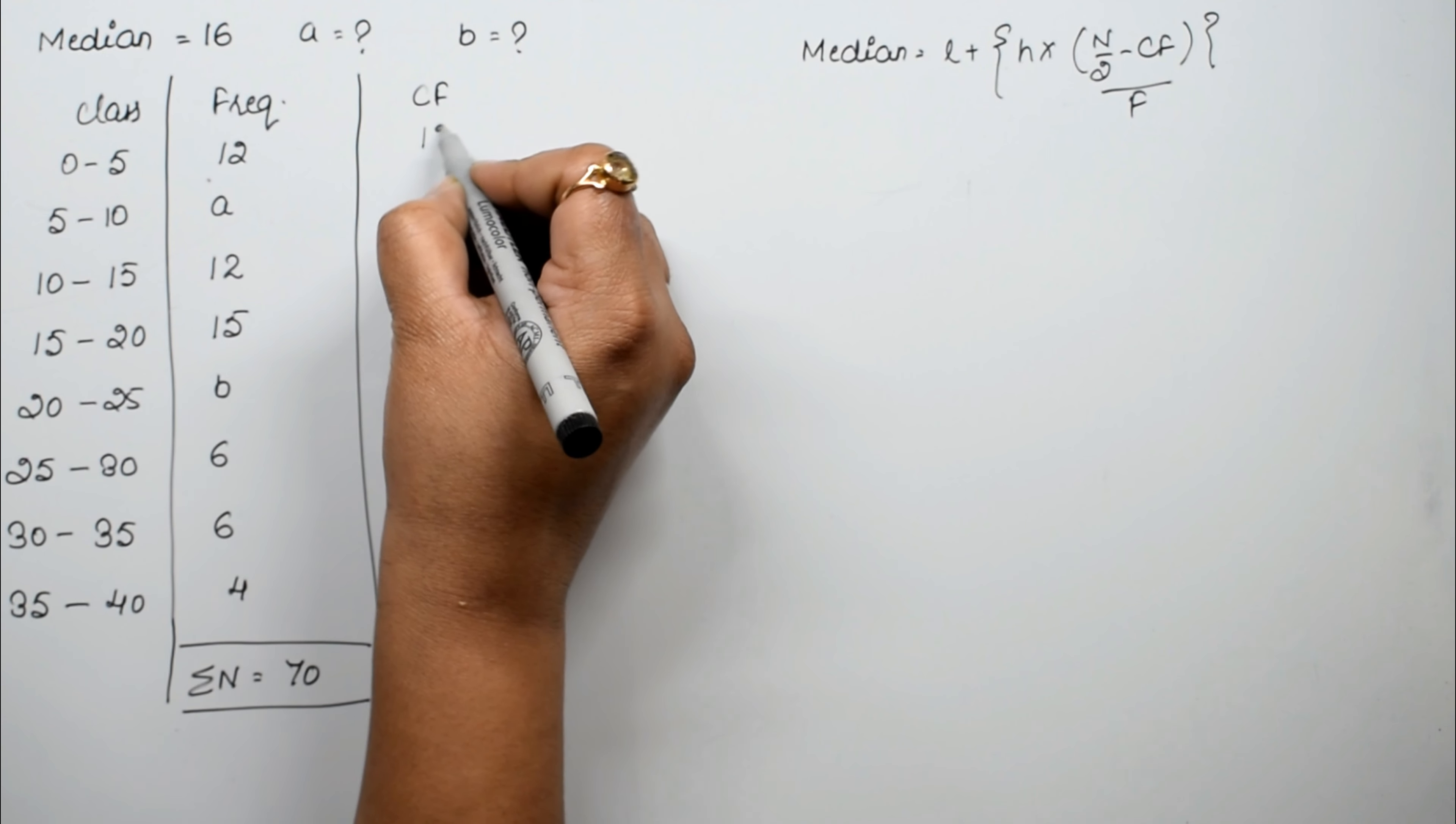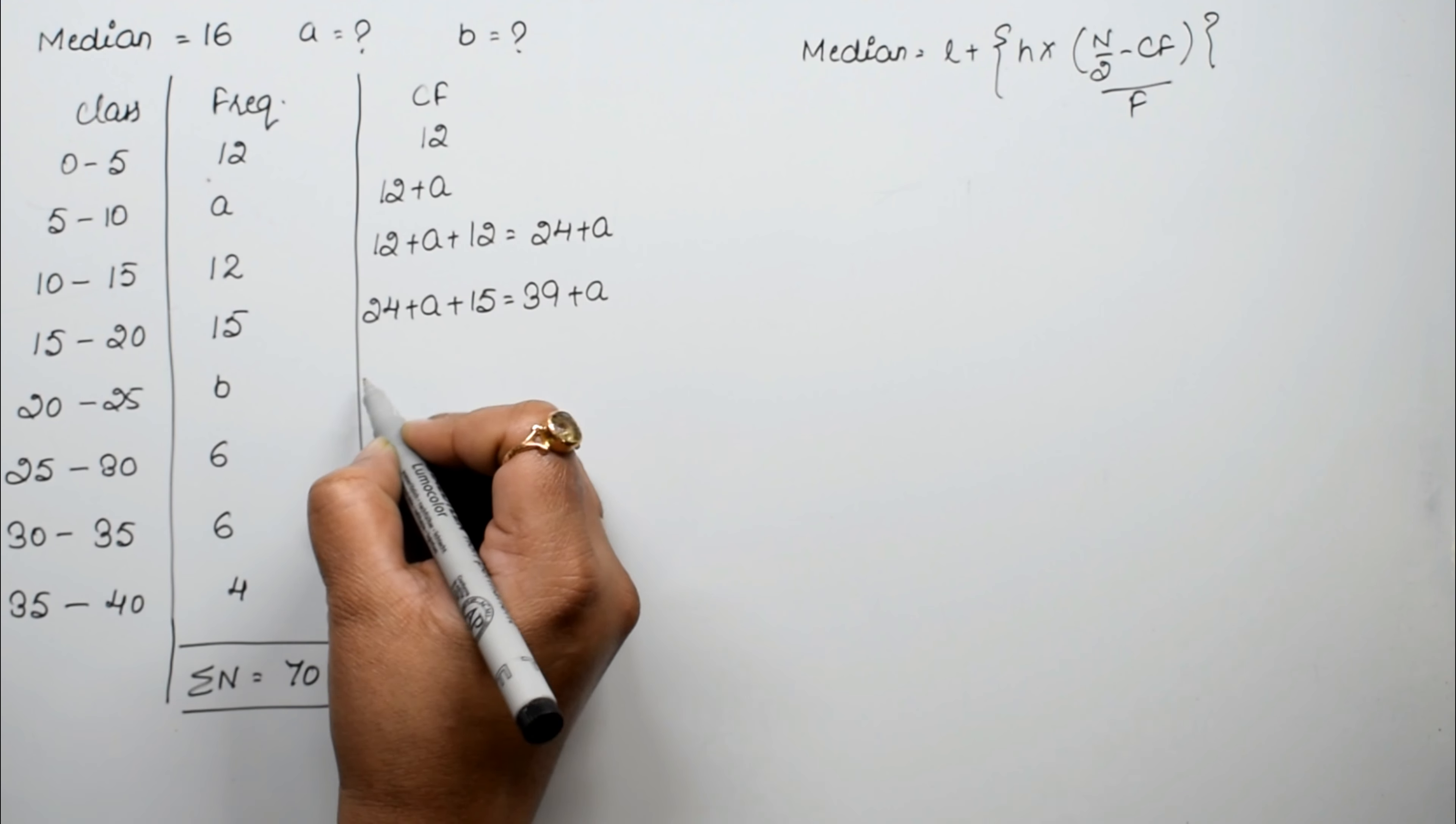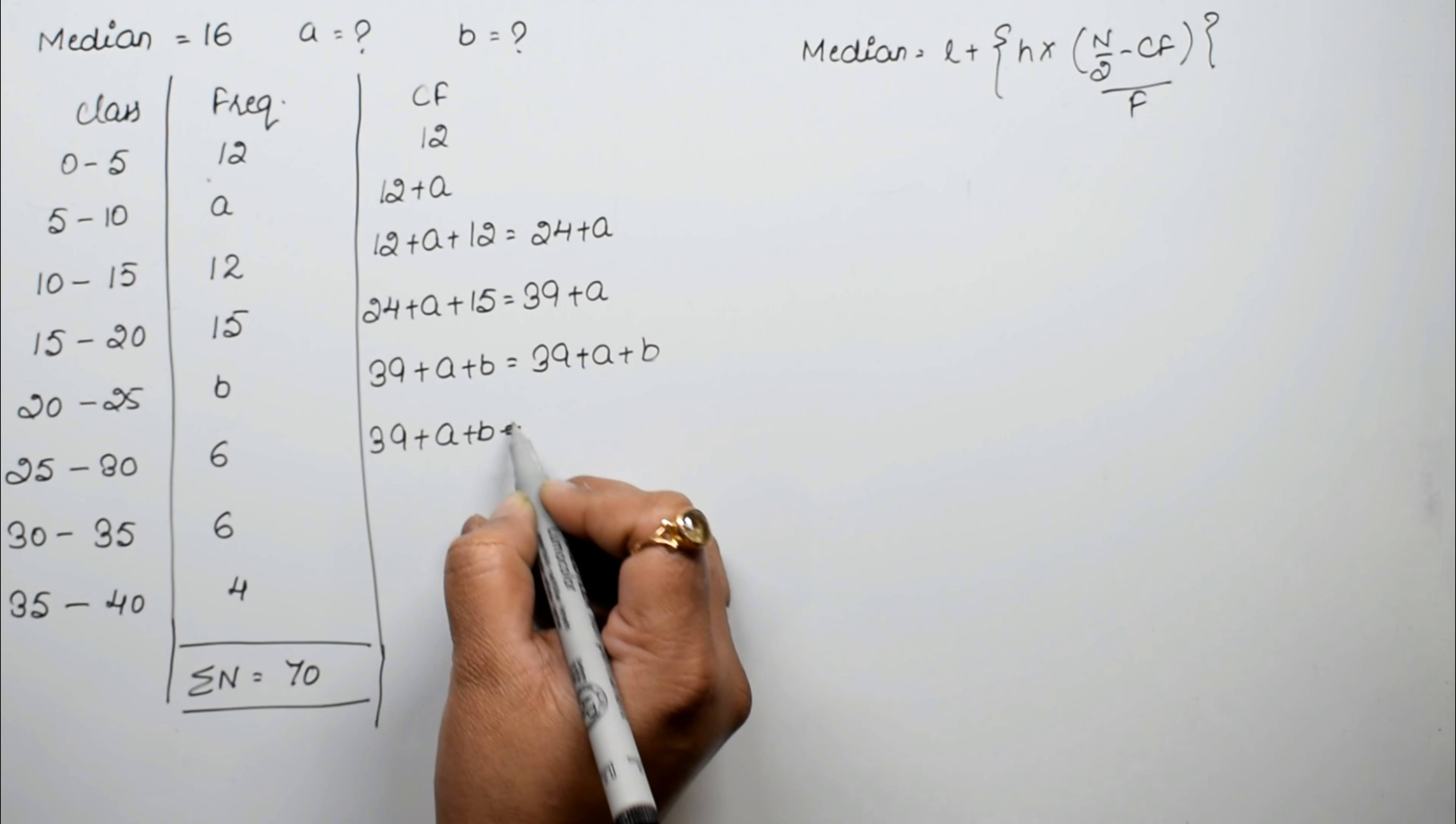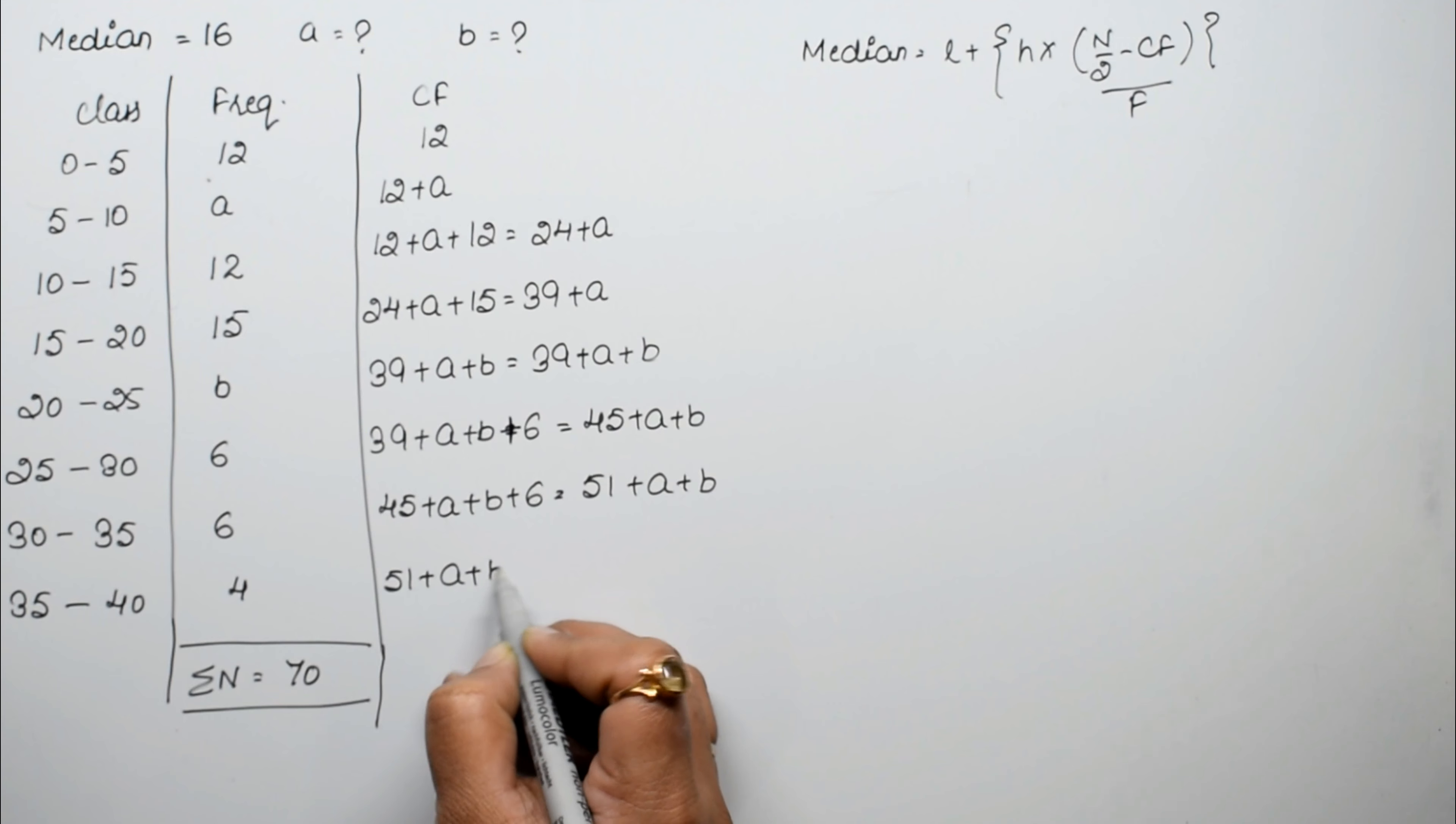Now for cumulative frequency: the first is 12, then 12 plus A. Then 12 plus A plus 12 equals 24 plus A. Then 24 plus A plus 15 equals 39 plus A. Then 39 plus A plus B. Continuing the calculation, we get 51 plus A plus B.